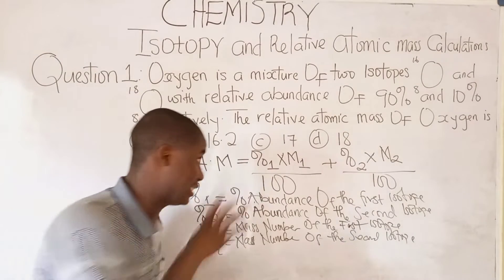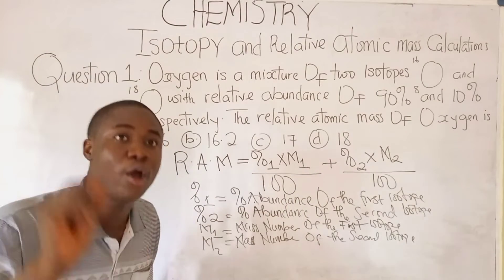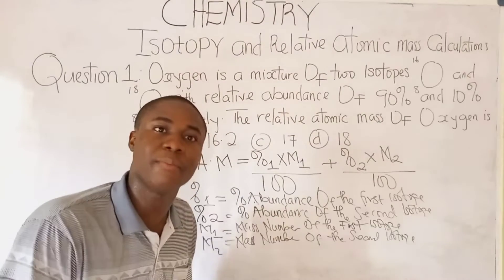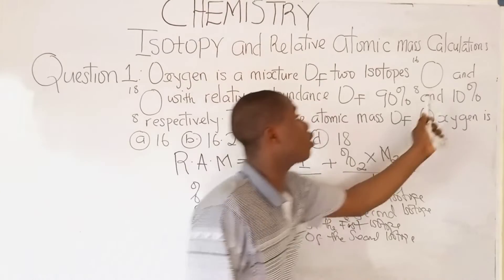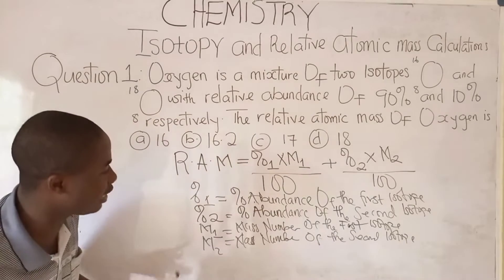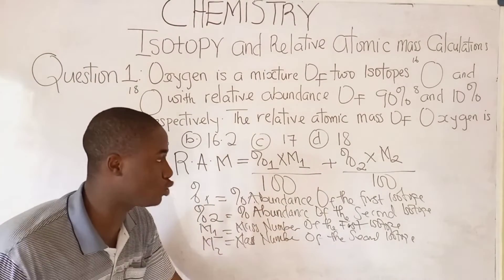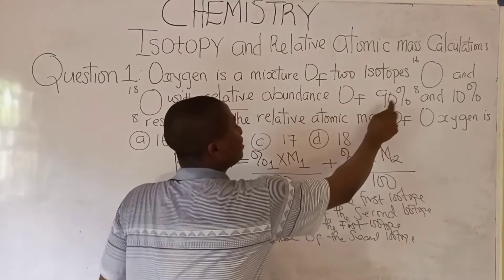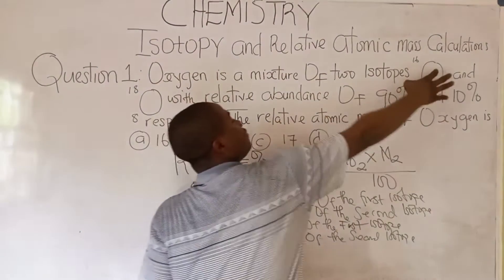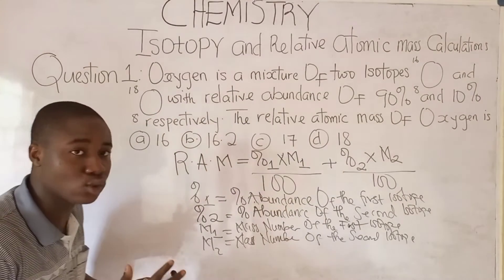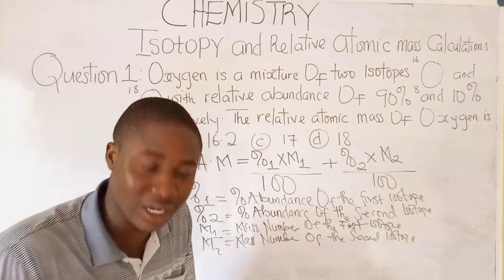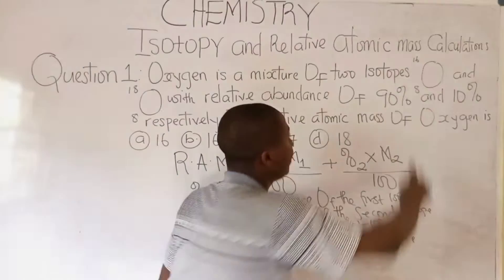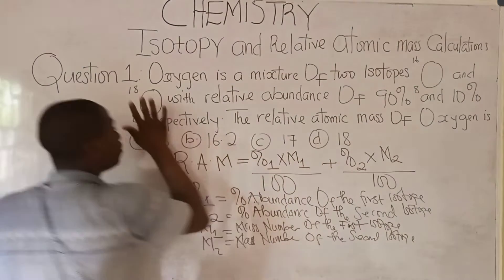So, percentage abundance of the first isotope — which is oxygen-16 since 16 comes before 18 — and the second isotope is oxygen-18. The question says the relative abundances are 90% and 10% respectively, so 90% is for the first isotope and 10% is for the second isotope. M1 is 16 and M2 is 18.